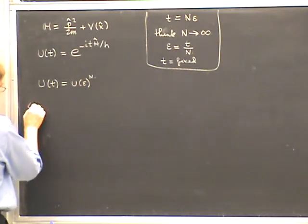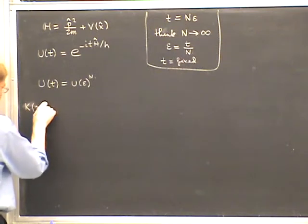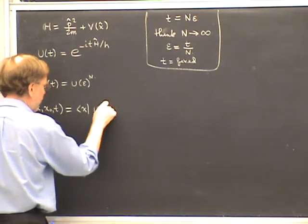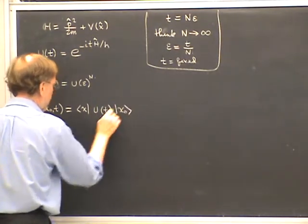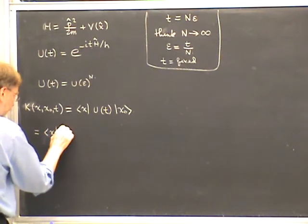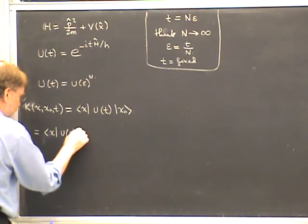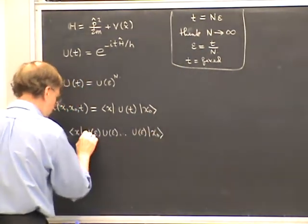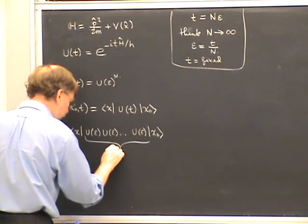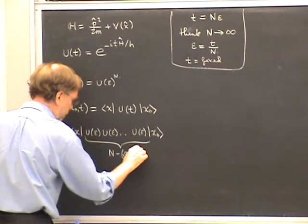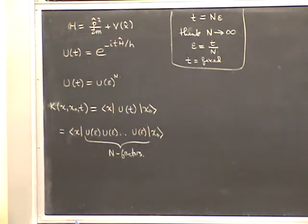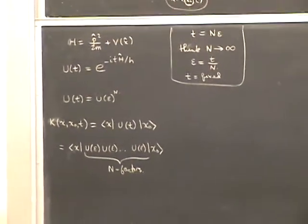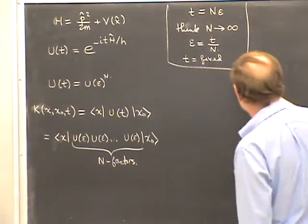Therefore the propagator K(X, X₀, T), which is the matrix element of U(T) sandwiched between ⟨X| and |X₀⟩, can be written as ⟨X|U(epsilon)·U(epsilon)···U(epsilon)|X₀⟩ with N total factors. We're switching over to a large number of small time propagations, and the question is: can we approximate a small time propagation in some useful way?